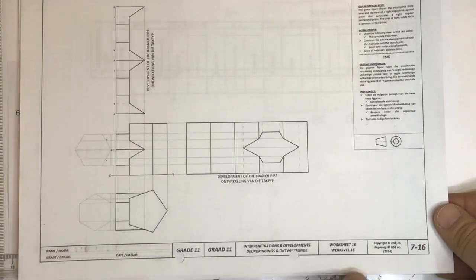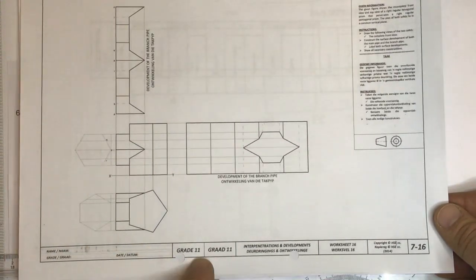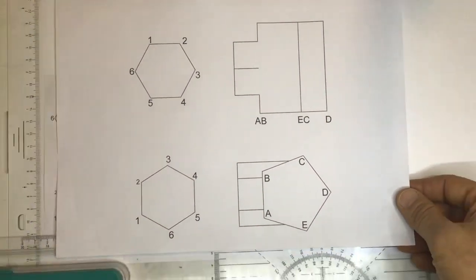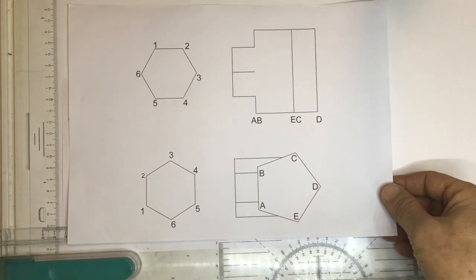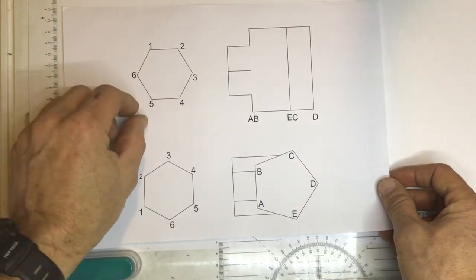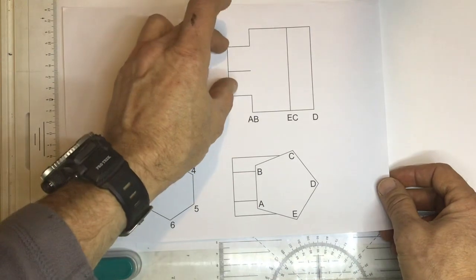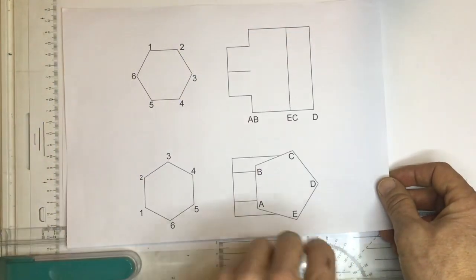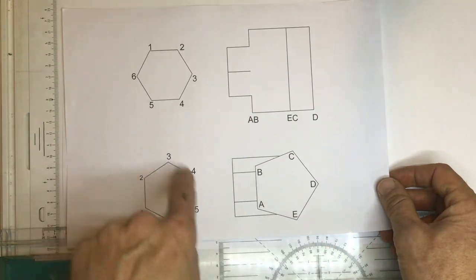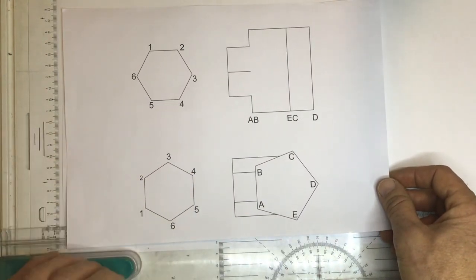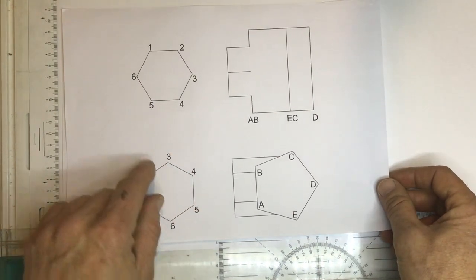It's problem 7.16 in the Grade 11 HSE textbook and hopefully we can get through it. First things first, let us just get the numbering correct. They've given you an auxiliary view and they've given you the two pipes in the front view and the two pipes in the top view. They didn't give you an auxiliary view there - you must draw that in. It's absolutely vital for this drawing.